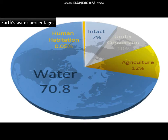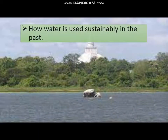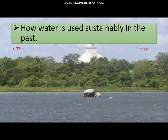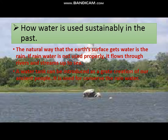Most of earth's fresh water is frozen in glaciers and ice caps. How is water used sustainably? The natural way that the earth's surface gets water is rain. If rainwater is not used properly, it flows through rivers and streams to the sea. A water tank can be introduced as a great creation of our ancient people, used to conserve rainwater.